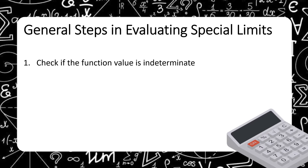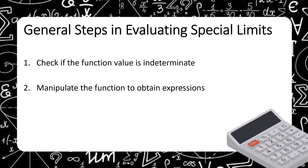These are the general steps for evaluating special limits. First, check if the function value is indeterminate by substituting the value of x into the function. If it becomes indeterminate, proceed to the next step: manipulate the function to obtain expressions such as sin(x)/x, (1 - cos(x))/x, or (e^x - 1)/x, ensuring the argument of sine equals the denominator, the argument of cosine equals the denominator, and the exponent of e equals the denominator. Then apply the special limit laws.